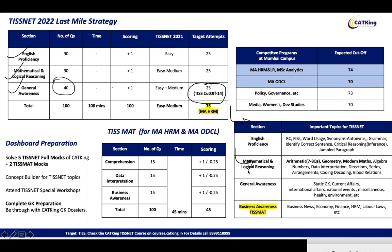For the Maths and Logical Reasoning section, all of Maths, LR, and DI comes within these 30 questions. The maximum weightage is from Arithmetic, followed by Geometry, Modern Maths, Algebra, and Numbers — one or two questions each. We also have DI and DS. In the LR portion, topics include direction sense, series, arrangements, blood relations, and coding-decoding.